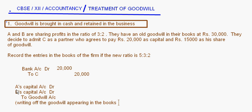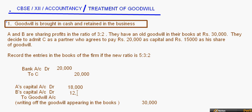The 30,000 is to be distributed in the ratio of 3 is to 2. So 30,000 × 3/5 = 18,000 for A, and 12,000 for B. After that, C is also bringing in goodwill, so there will be one more entry: bank account debit to premium account, for the amount of goodwill brought by C, which is 15,000.